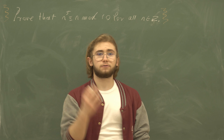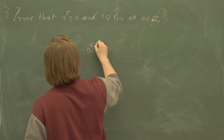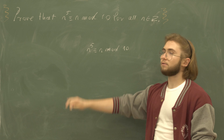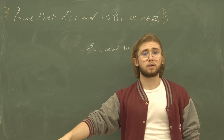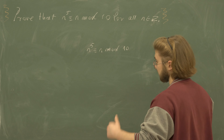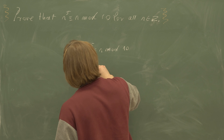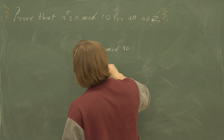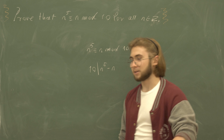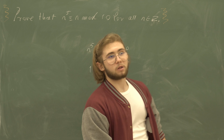What does it mean for n to the fifth to be congruent to n modulo 10? It means that n^5 and n both have the same remainder upon division by 10. And if they have the same remainder, then by definition 10 must divide the difference, which is n^5 minus n.